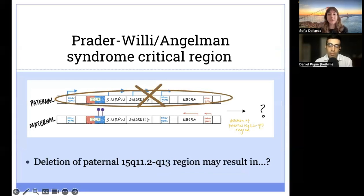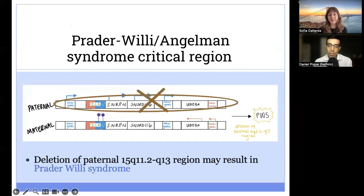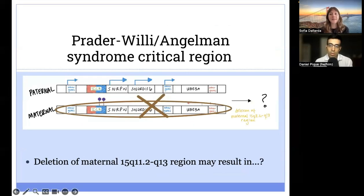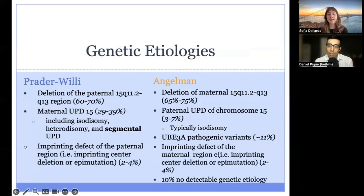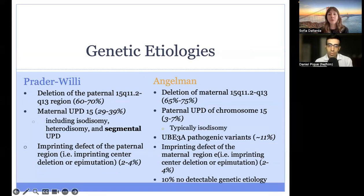Here is an example of one such change. This figure represents a deletion of the Prader-Willi critical region on the paternal allele, which may result in Prader-Willi syndrome. On the flip side, deletion of the Prader-Willi critical region on the maternal allele may result in Angelman syndrome. The most common molecular and genetic cause of both Prader-Willi syndrome and Angelman syndrome is a deletion of the Prader-Willi critical region. Another cause of both conditions is uniparental disomy, or UPD.